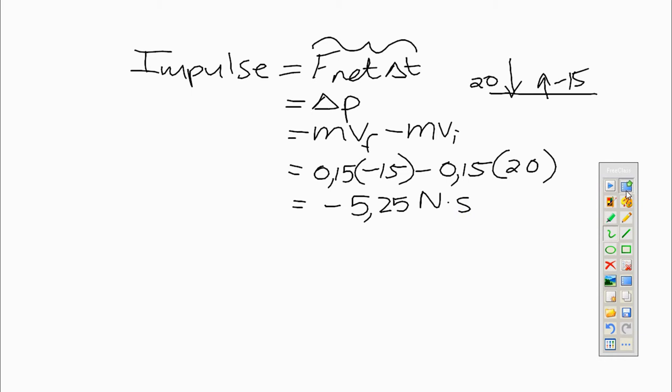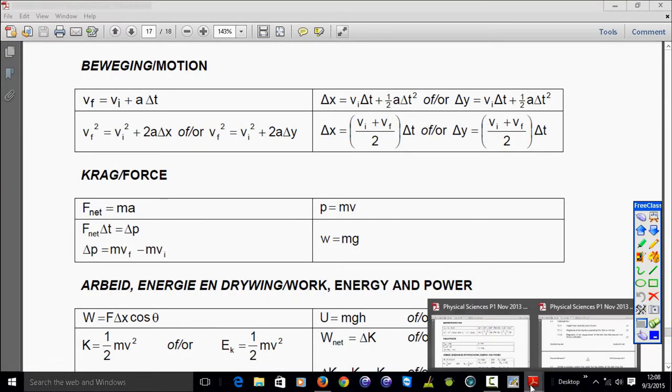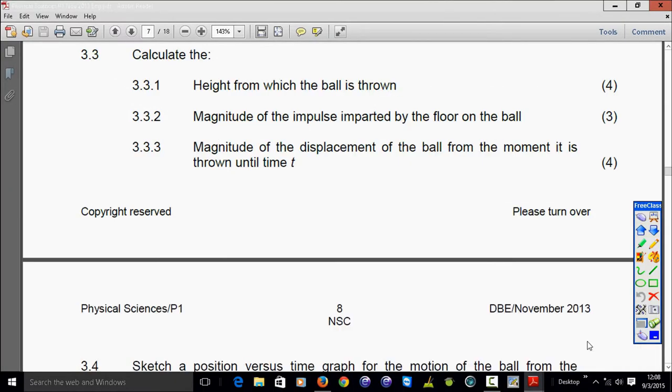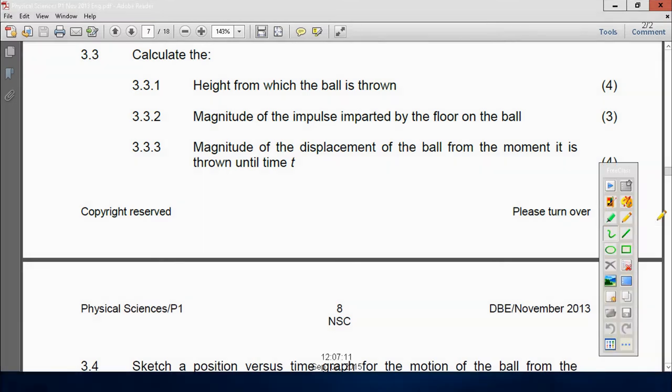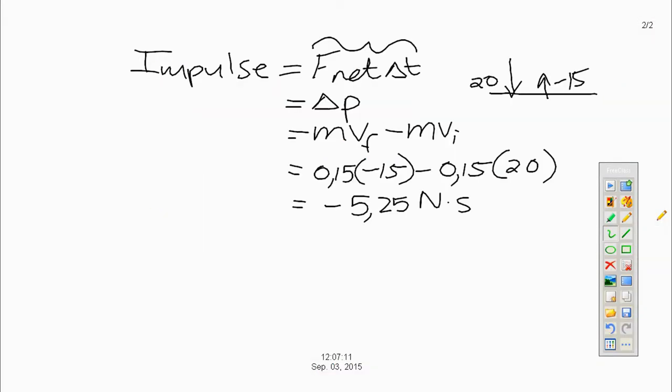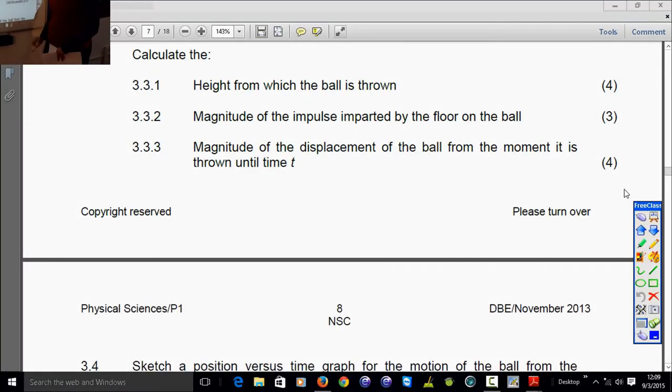Let's just quickly look at our question again. Magnitude of the impulse. So again, we do not have to leave the negative there. We don't even have to interpret the negative. It's the floor on the ball. It's upward. But in this case, we only get to answer 5.25 newton seconds because they are asking me the magnitude.